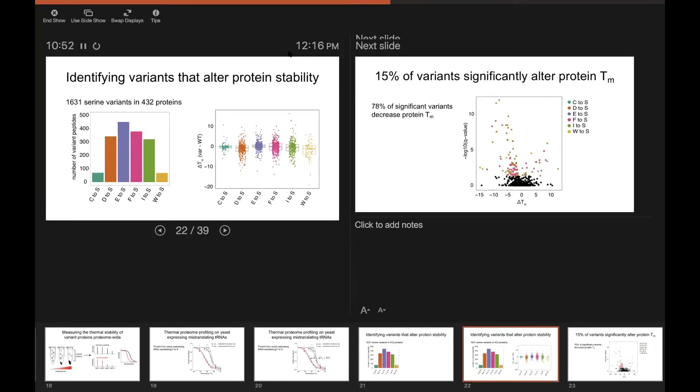And if we plot the distribution of TM differences that we can see, we see that these are all centered, for the most part, around zero, although there are quite a number of variants that have large magnitude effects on TM of up to 10 or even 20 degrees.